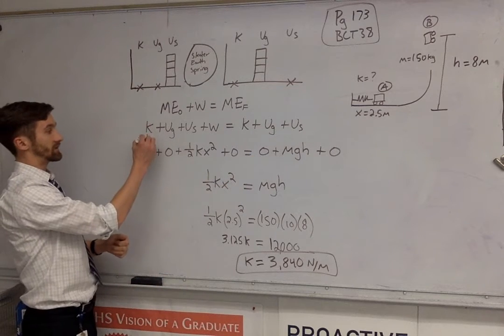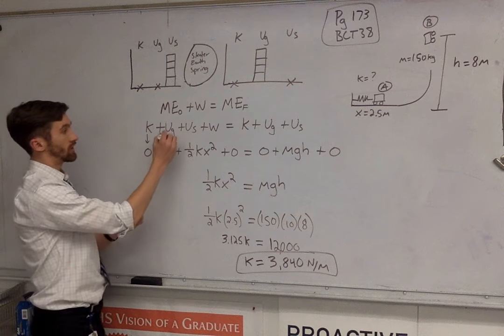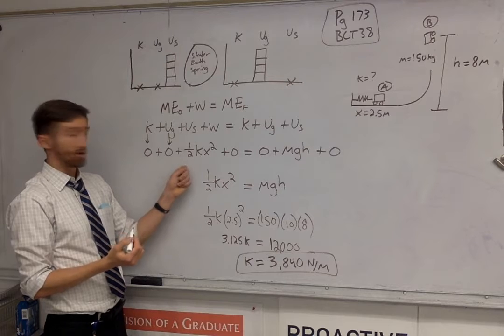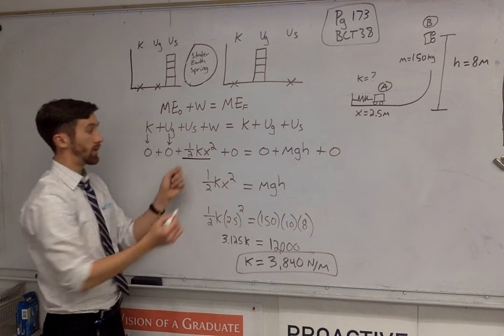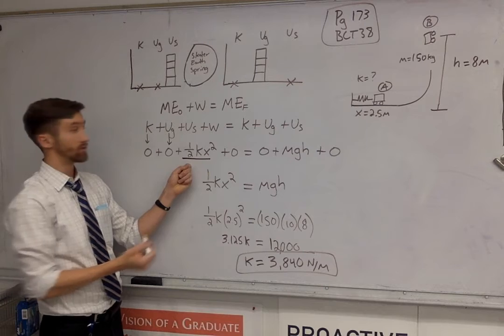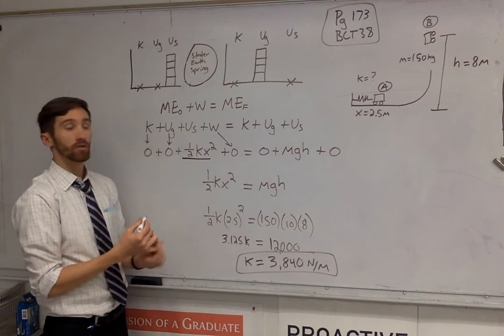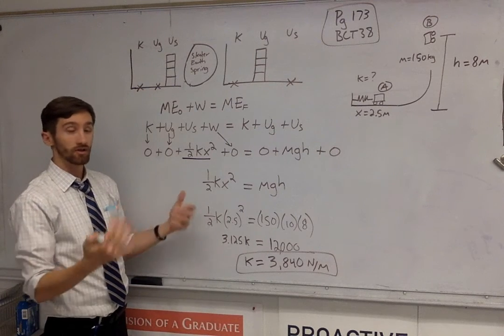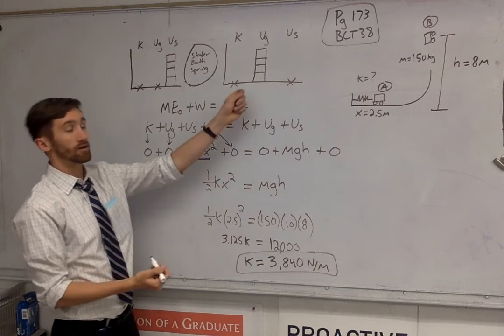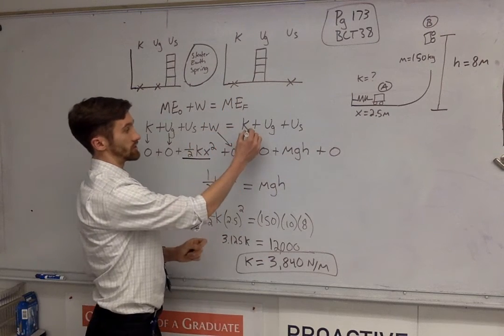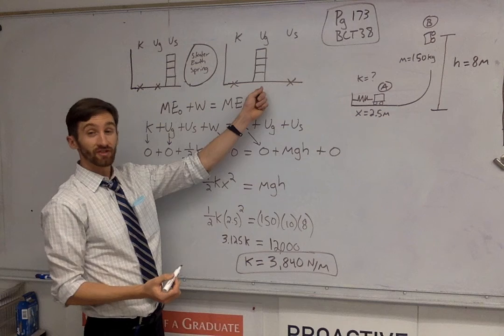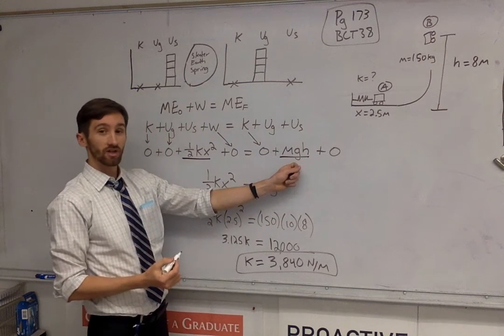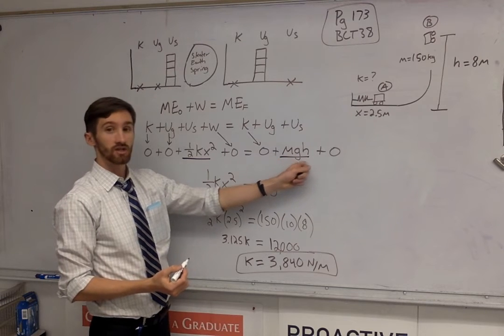Now, we put in our values. Kinetic at the beginning is zero, gravitational at the beginning is zero, spring potential is not zero, so we put in the equation for spring potential, one-half kx squared. Work is zero, there's no outside forces, there's no push, there's no friction, there's no outside work happening. Here at the end, kinetic energy is zero, gravitational is not zero, so we put in the equation for gravitational potential energy, m times g times h, and spring potential is zero.